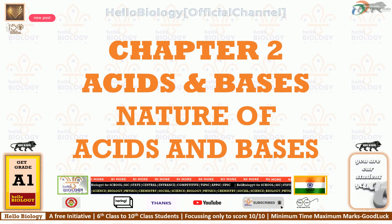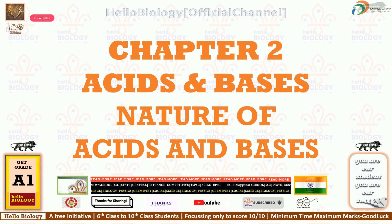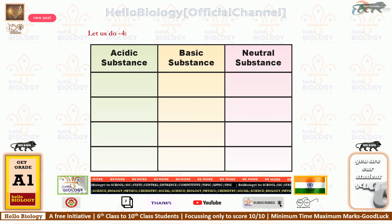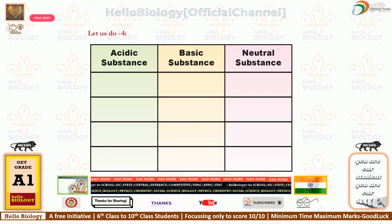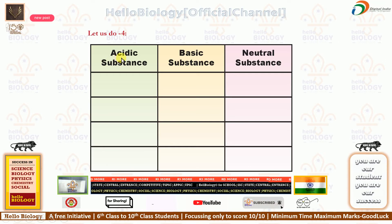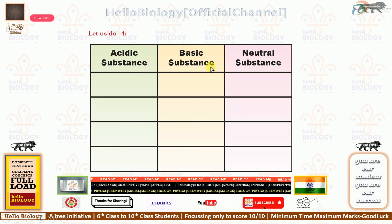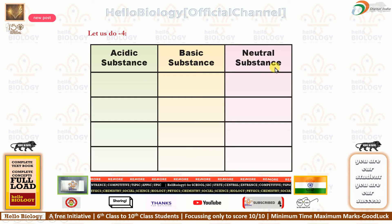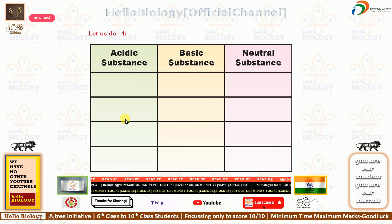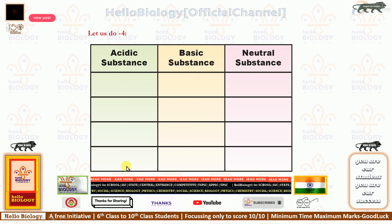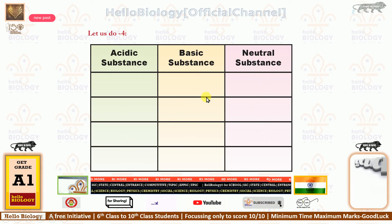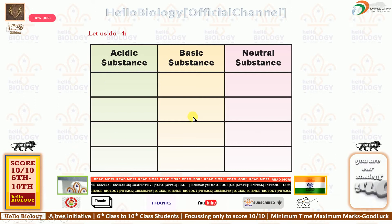Chapter 2: Acids and Bases. Today we will discuss the nature of acids and bases. Let us do the activity from the first chapter, second chapter. There are three columns: acid substance, basic substance, and neutral substance. Before class, you need to understand about acids, bases, and neutral substances, then fill in this table.